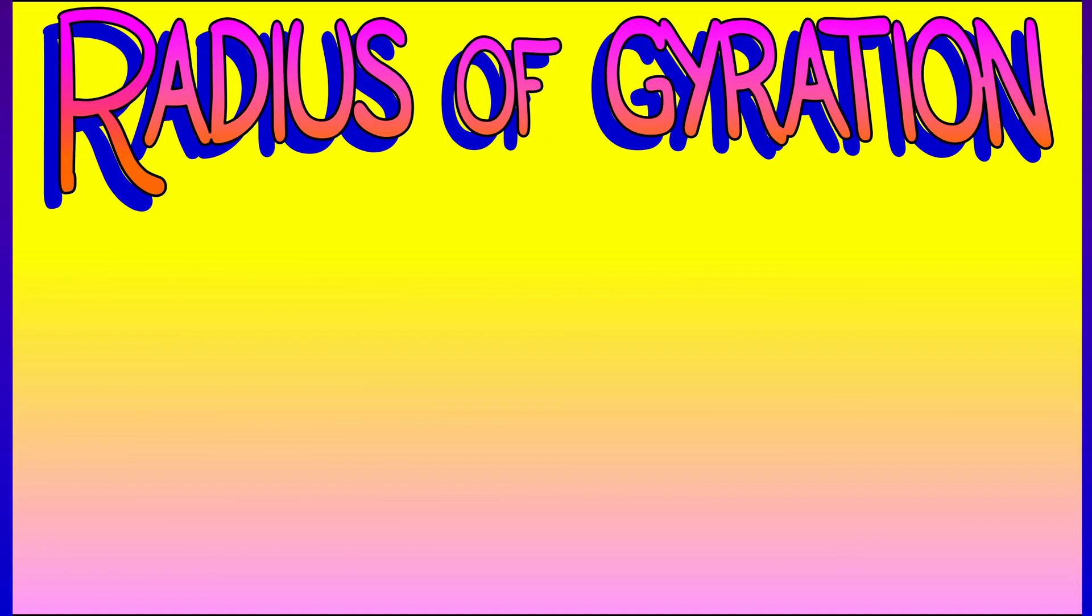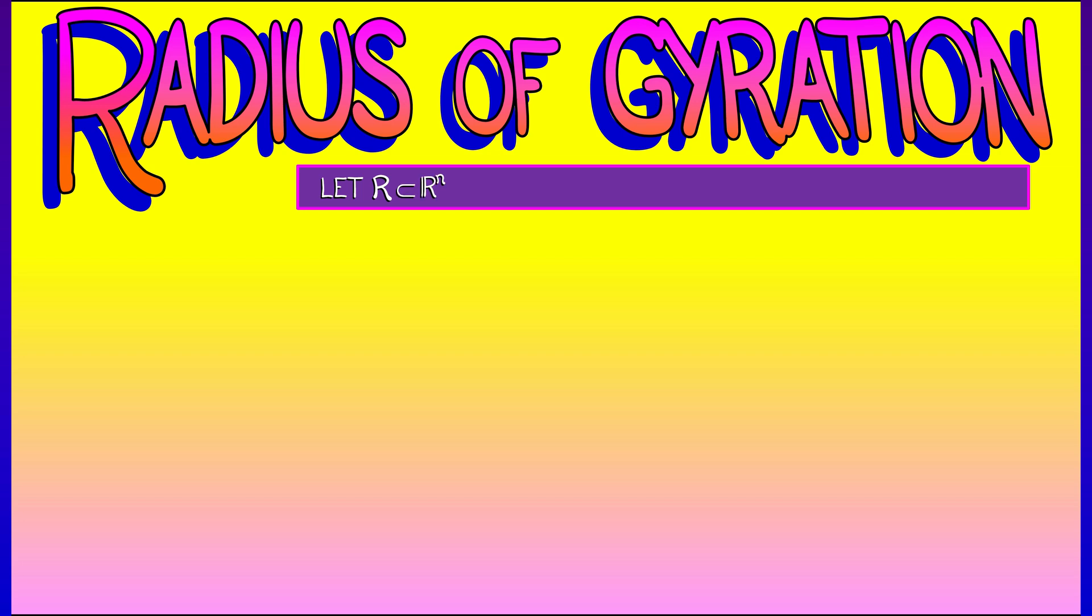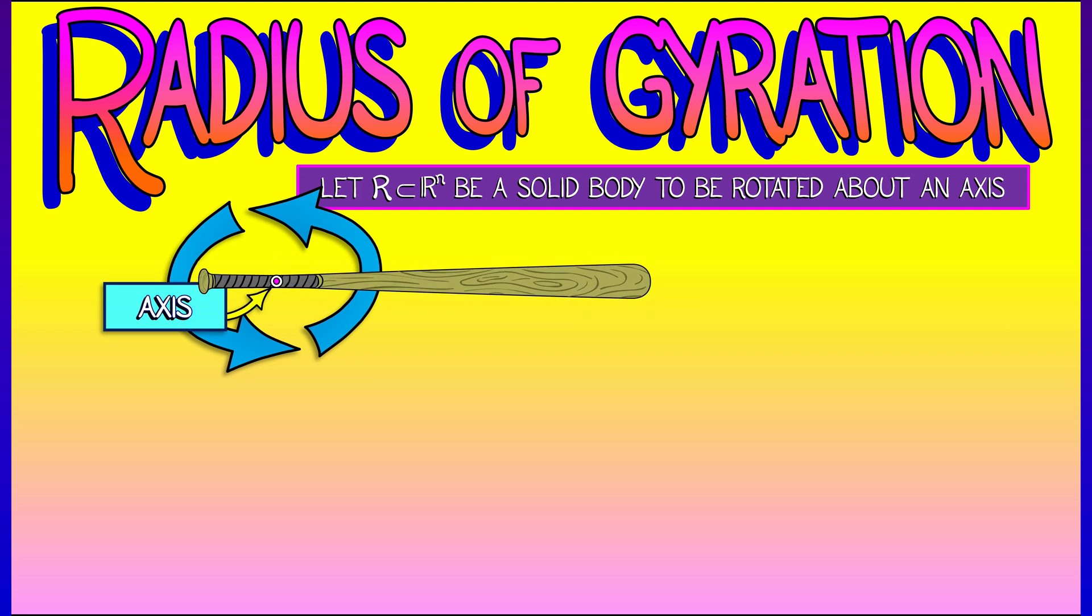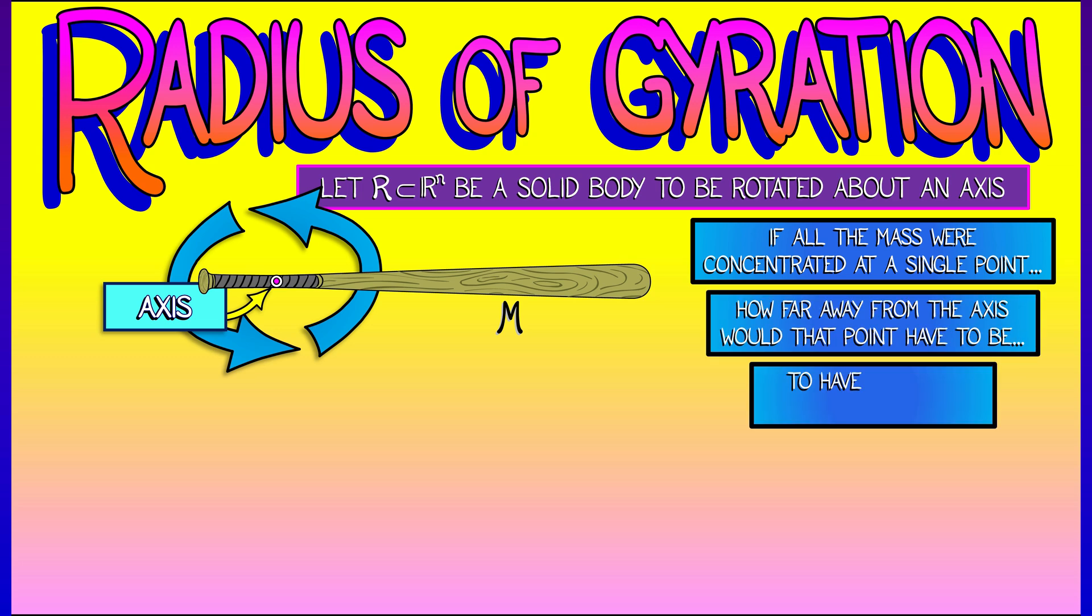This is called the radius of gyration. This is very cool. Let's go back to the physical intuition of your favorite object that you're swinging about an axis. The radius of gyration says the following: if you were to take all of that mass and focus it at a single point, how far away from the axis of rotation would that point have to be in order to have the same moment of inertia as the full distributed body?